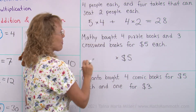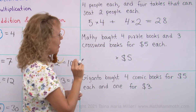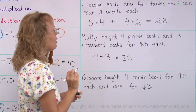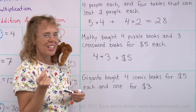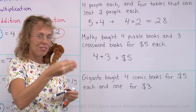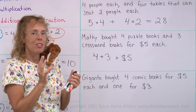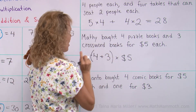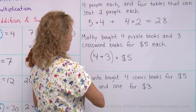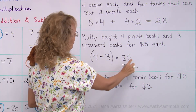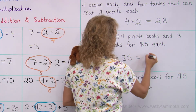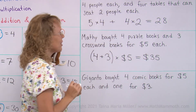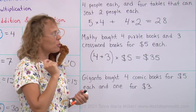How many books? Seven books, but I'm going to write it as 4 plus 3 using the numbers from the problem. I do want to add the 4 and 3 first — to find out how many books: 7 books. So this will be in parentheses to make sure that you add first and then multiply. 7 times 5 is $35.